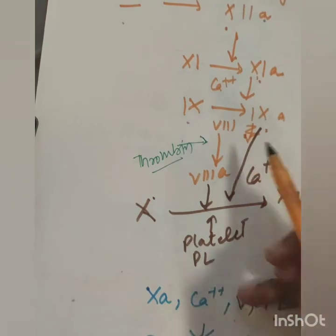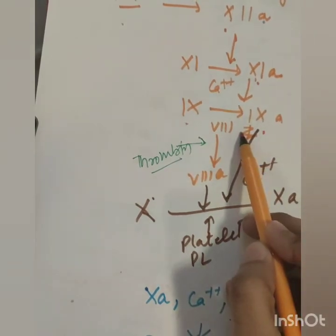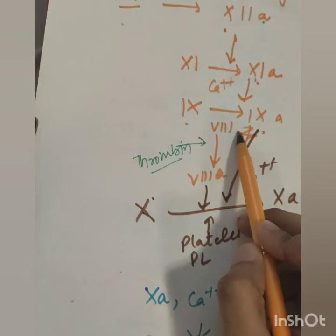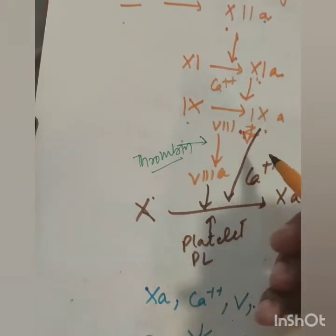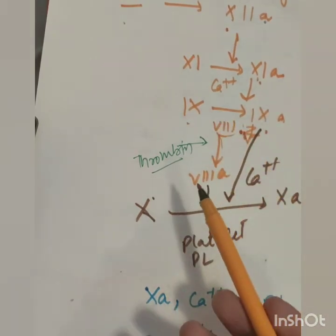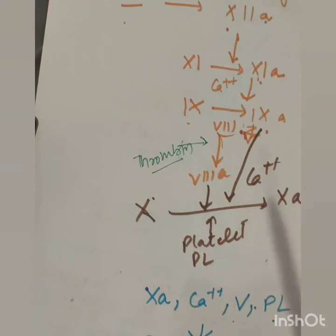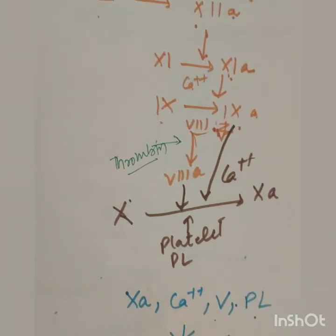Another thing. The 8th factor we call it anti-hemophilic factor. Because the 8th factor in deficiency, we call it hemophilia. The 8th factor is necessary, which activates the 10th factor. So this was all the important things of hemostasis and coagulation. If you have any queries, please let me know. Thank you.